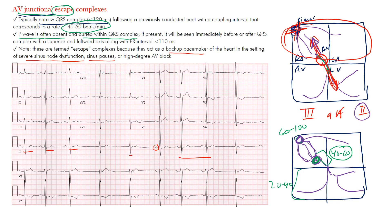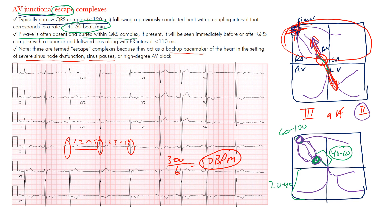To estimate the rate: count the large boxes between two consecutive beats. Counting six large boxes between the escape beats, divide 300 by 6, which gives 50 beats per minute — within the 40 to 60 bpm range expected for a junctional rhythm. If the rhythm originates entirely from the junction, the intrinsic rate should remain between 40 and 60 bpm.